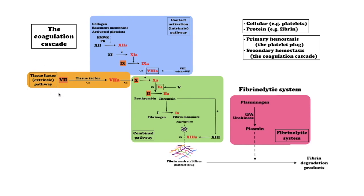The extrinsic pathway occurs during tissue damage, when damaged cells release tissue factor 3. Tissue factor 3 acts on factor 7 in circulation and feeds into the final step of the common pathway, in which factor 10 causes thrombin to be created from prothrombin. This pathway also requires calcium.